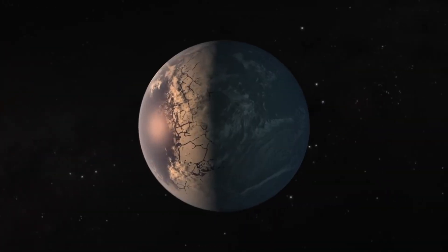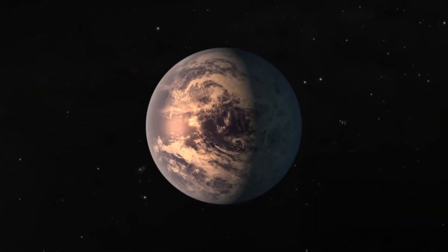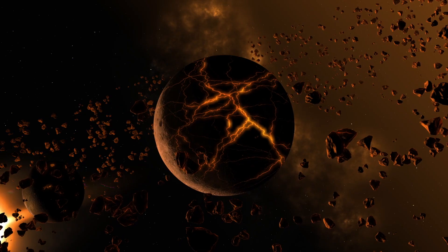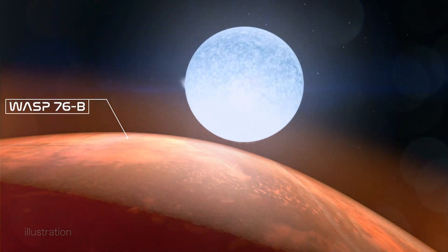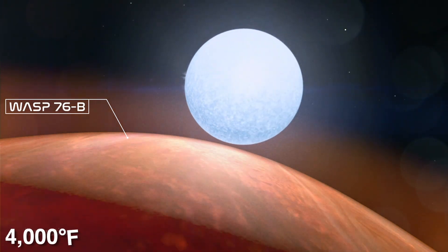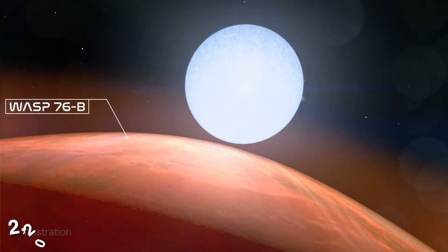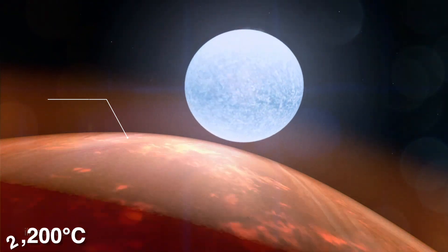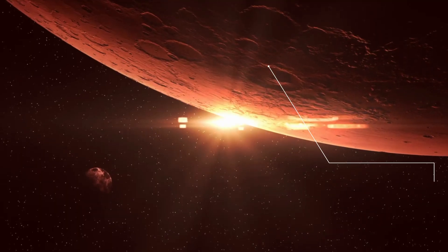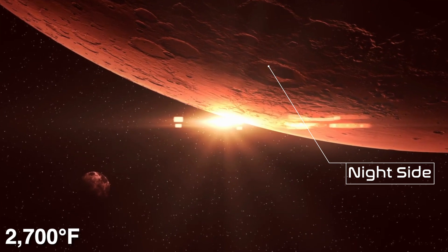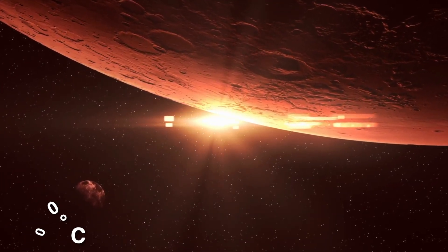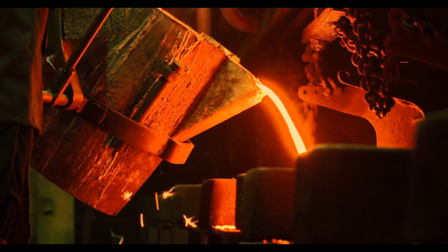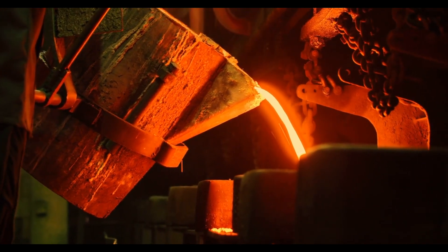Many hot Jupiters are tidally locked, which means they always expose the same face to their star, causing their daysides to become extremely hot. In the case of WASP-76b, the dayside reaches a scorching 4,000 degrees Fahrenheit or 2,200 degrees Celsius. But the planet's night side is also a whopping 2,700 degrees Fahrenheit or 1,500 degrees Celsius, though that's cool enough for iron to condense and precipitate out as a rain of molten metal.